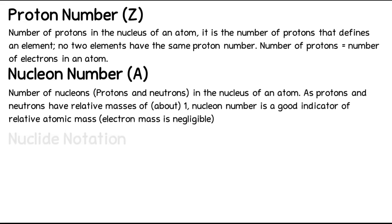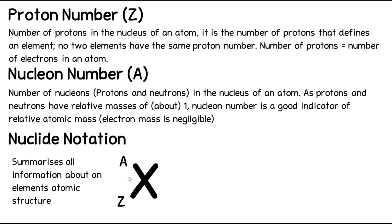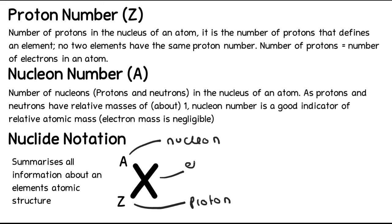That leads us to nuclide notation, which is a way to summarise all the basic information about the atomic structure of an atom in one notation. You'll likely have seen it before, because nuclide notation is used all over the periodic table. It looks like this: A is the nucleon number or mass number, Z is the proton number or atomic number, and X is the element symbol - for example, for carbon it would be a capital C.